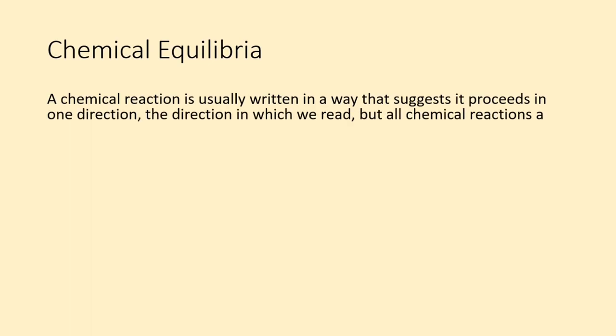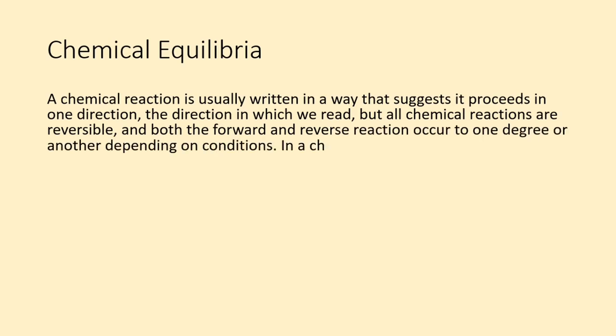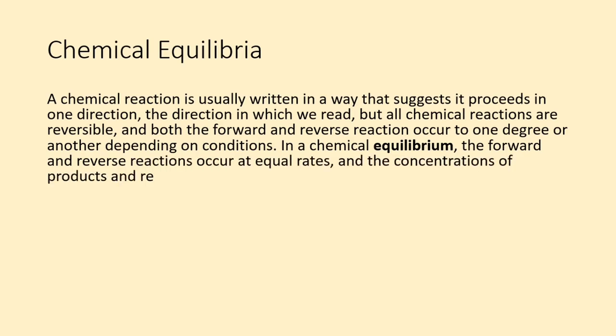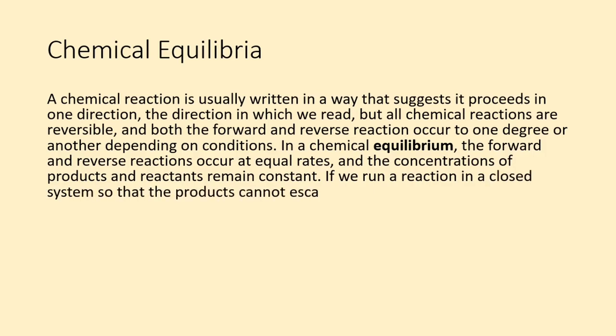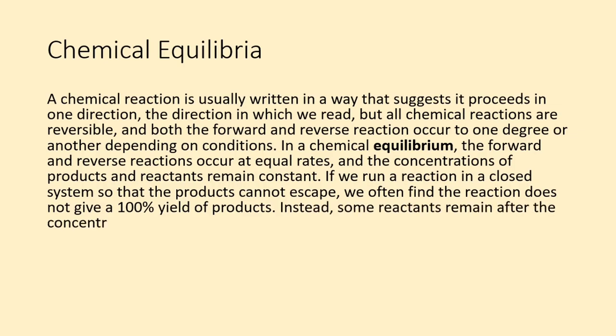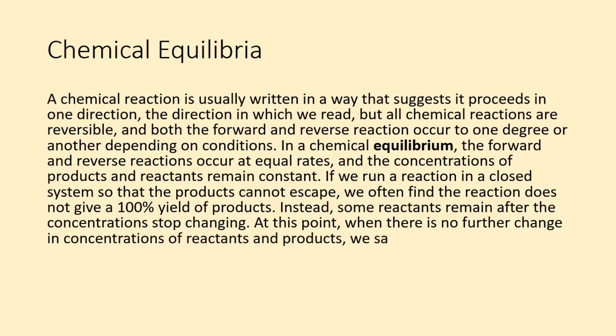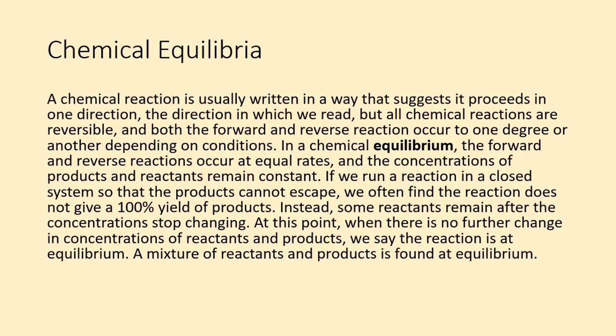The chemical reaction is usually written in a way that suggests it proceeds in one direction, the direction in which we read, but all chemical reactions are reversible, and both the forward and reverse reaction occur to one degree or another depending on conditions. In a chemical equilibrium, the forward and reverse reactions occur at equal rates, and the concentrations of products and reactants remain constant. If we run a reaction in a closed system so that the products cannot escape, we often find the reaction does not give a 100% yield of products. Instead, some reactants remain after the concentrations stop changing. At this point, when there is no further change in concentrations of reactants and products, we say the reaction is at equilibrium. A mixture of reactants and products is found at equilibrium.